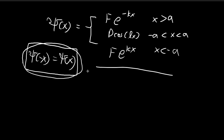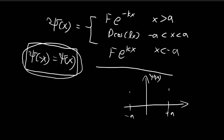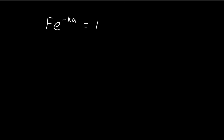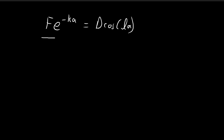Now we consider the continuity requirement. At x = +a and x = -a, ψ(x) must be continuous. Substituting a into the exponential expression gives f·e^(-ka), and substituting a into the cosine expression gives D·cos(la); both must be equal. Because this is an even function, ensuring continuity at positive a automatically ensures it at negative a, so we only need to focus on positive a.